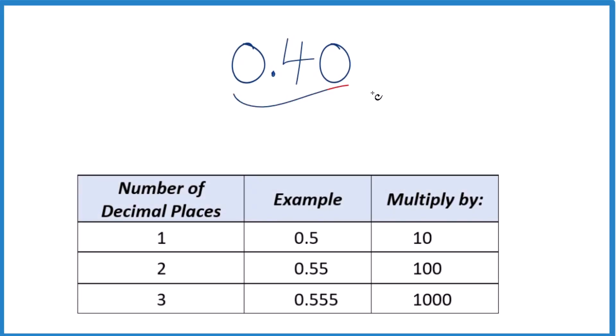Let's convert the decimal 0.40 to a fraction. First off, when we have 0.40, that zero on the end really doesn't tell us any more information here. Let's just get rid of it. It'll be the same value. Now we have 0.4.